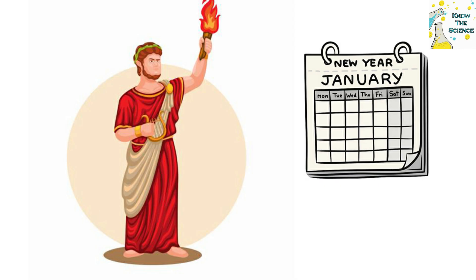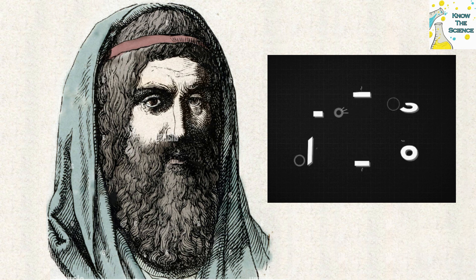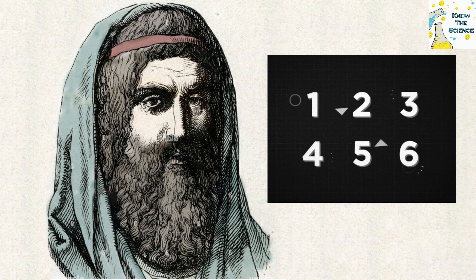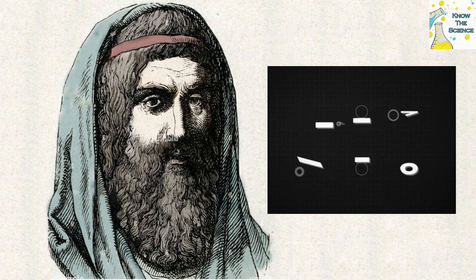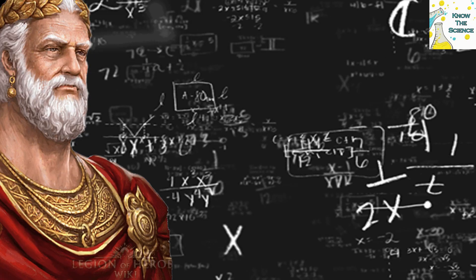The previous calendar had had six months of 30 days and four months of 31, for a total of 304 days. However, Numa wanted to avoid having even numbers in his calendar, as Roman superstition at the time held that even numbers were unlucky. He subtracted a day from each of the 30-day months to make them 29. The lunar year consists of 355 days, which meant he now had 56 days left to work with.